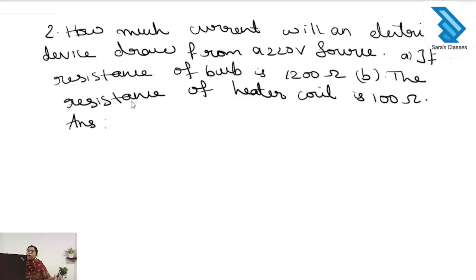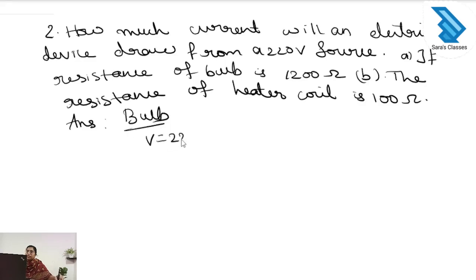Second question: how much current will an electric device draw from a 220 volt source? The resistance of the bulb and resistance of the heater coil are given. First, for the bulb: voltage is 220 volt and resistance is 1200 ohm.